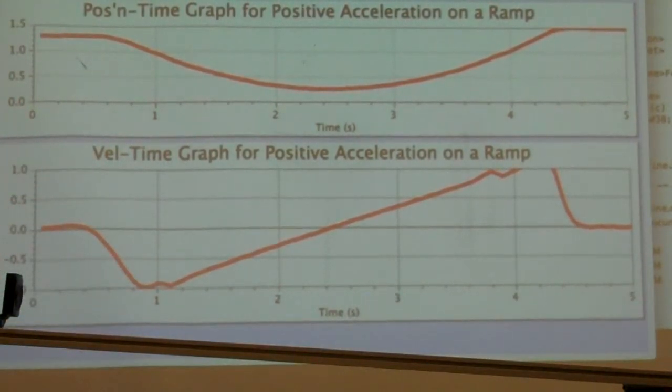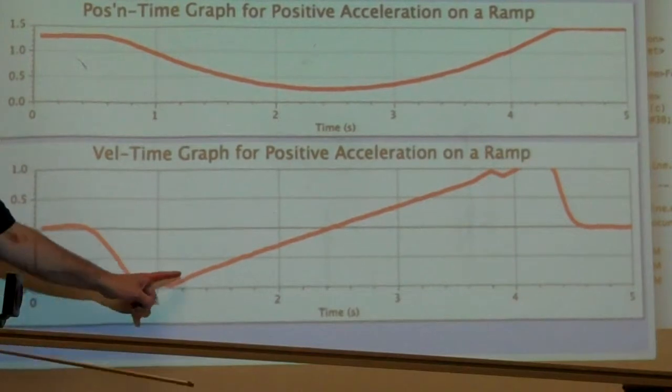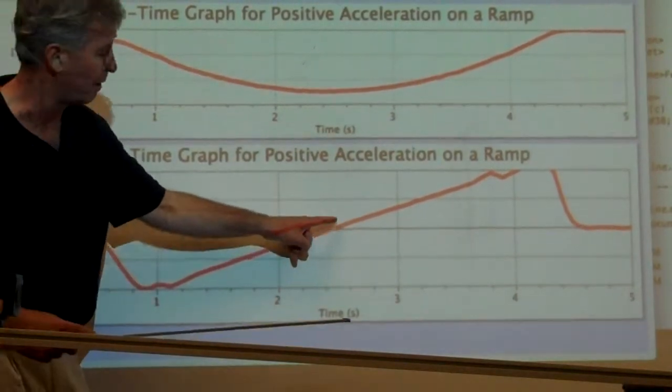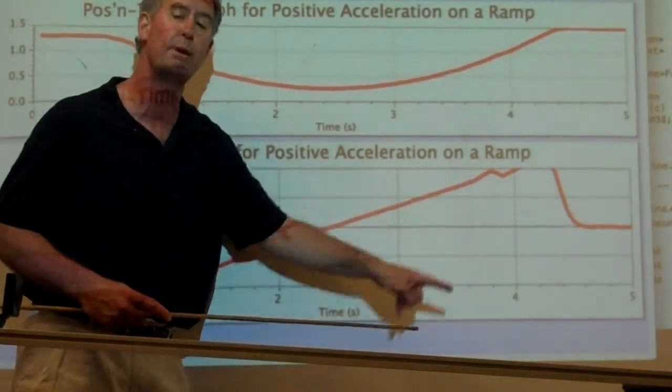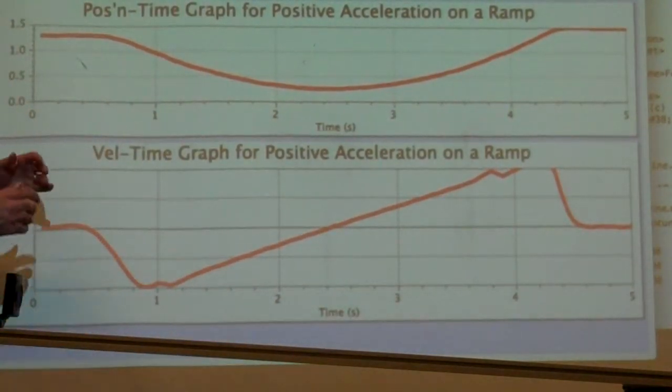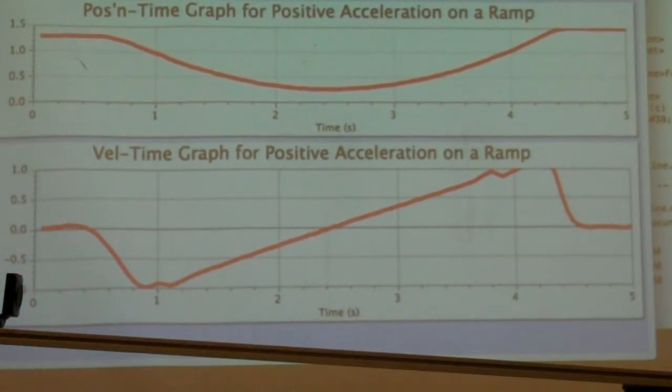So two ways to get a positive acceleration here. First, have a negative velocity that's getting smaller, and then have a positive velocity that's getting bigger. Those are the two ways to have a positive acceleration, and that's what we see in this little video demonstration. Thanks for watching.